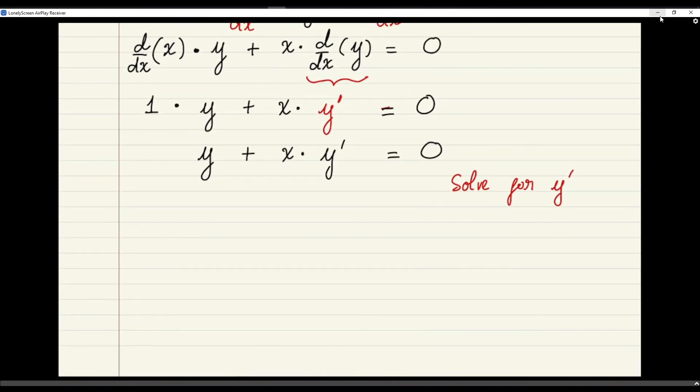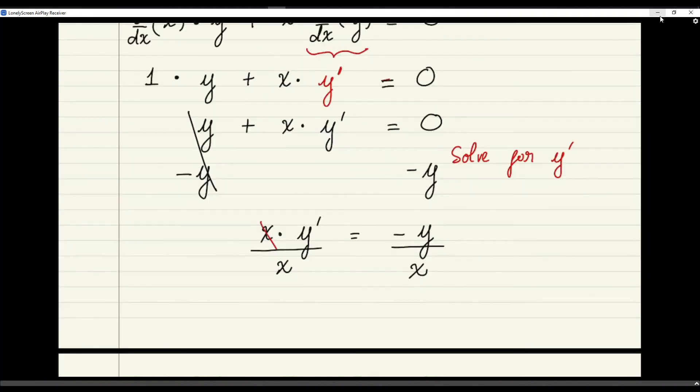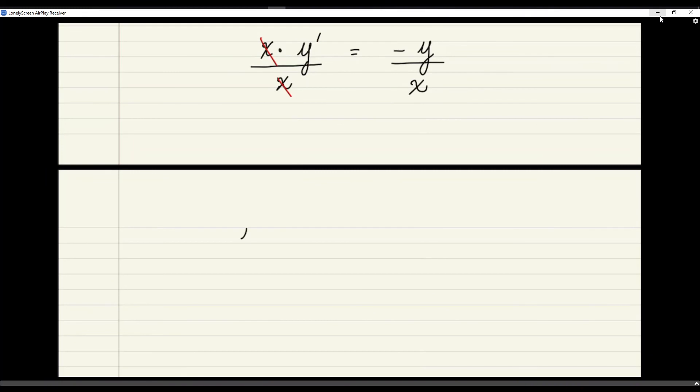Well, first we are going to have to subtract y on both sides of our equation. That cancel out. So we are having x times y prime equal to negative y. And now we are going to have to divide both sides by x. So the x cancel out. And it gives us that y prime is equal to negative y over x. So this is the implicit expression for the derivative d dx of y.